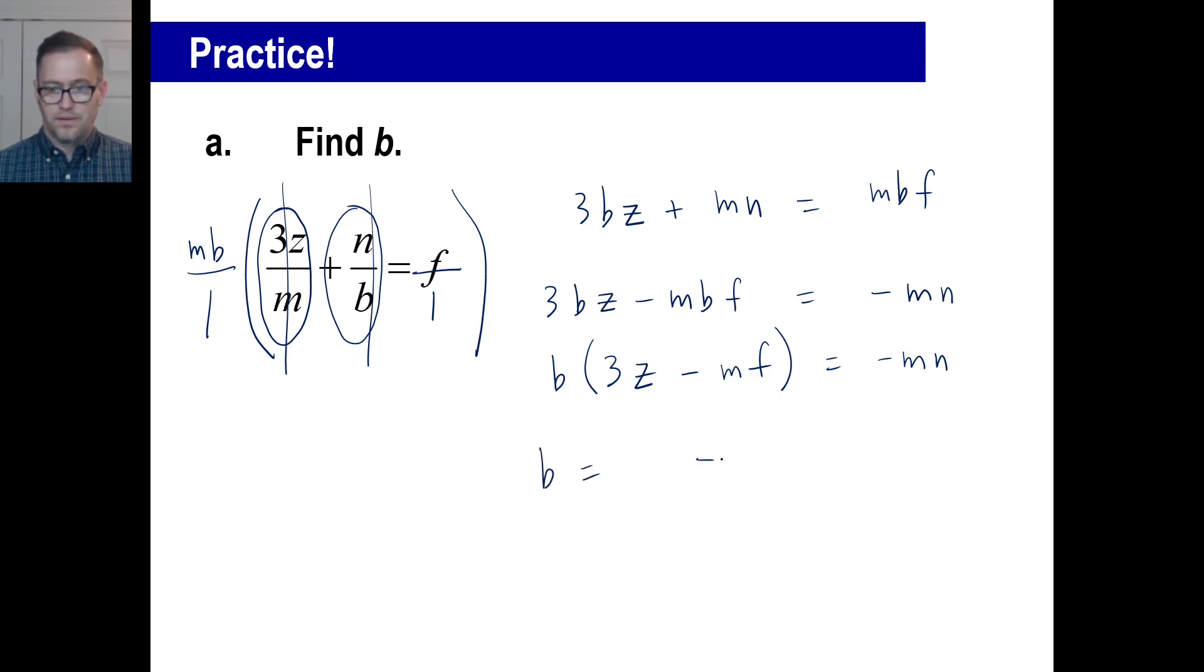So, B to get it by itself. Of course, we know what to do now. Negative MN over 3Z minus M times F. And don't forget, anytime you see an answer in the back of the book, it might have every single one of these terms with an opposite sign. If it does, you're in good shape. Go to X1. Okay. Alright.